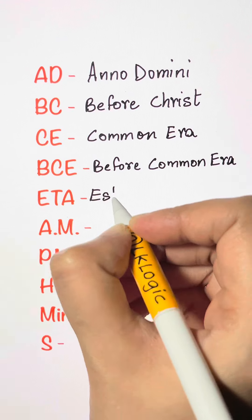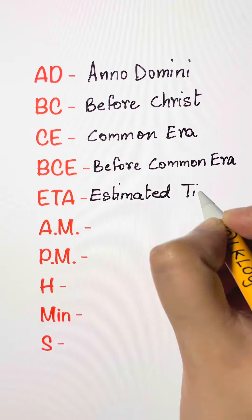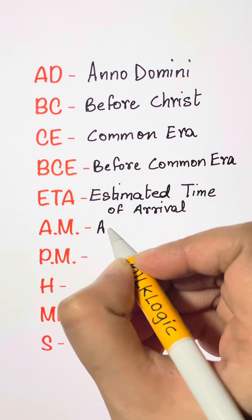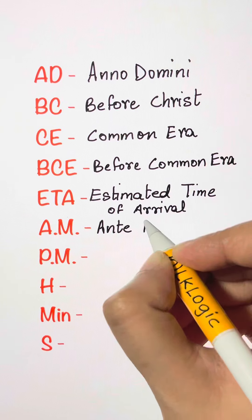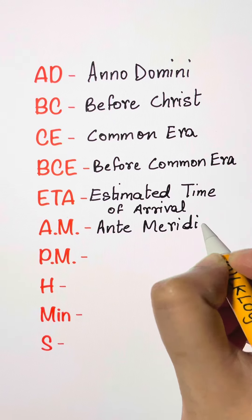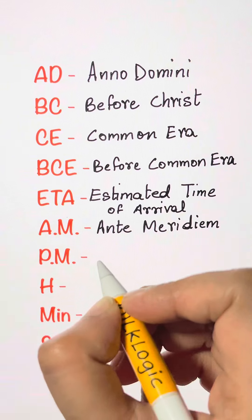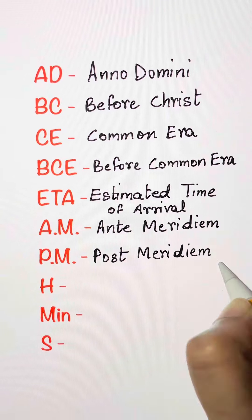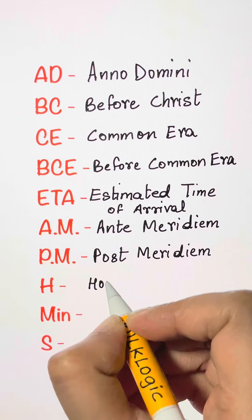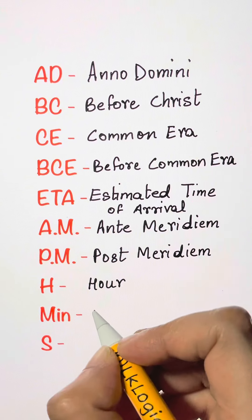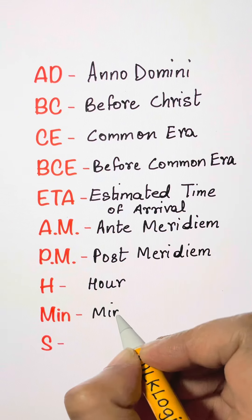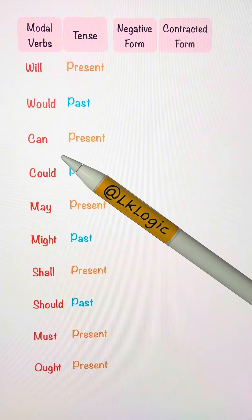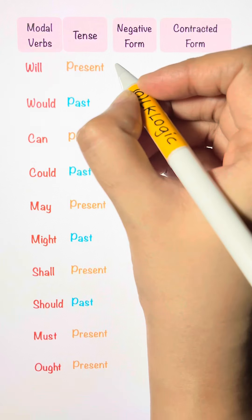E.T.A. — Estimated Time of Arrival. A.M. — Antimeridium. P.M. — Postmeridium. H. — Hour. Min. — Minute. S. — Seconds.